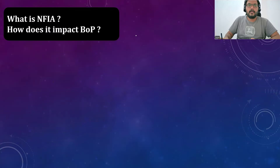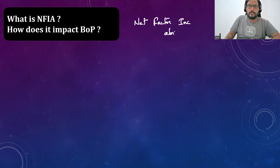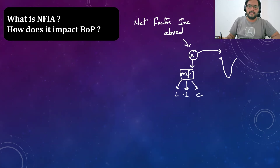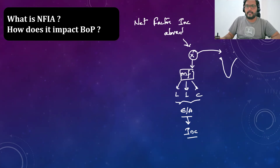Let us understand what balance of payment is and what NFIA is. NFIA means Net Factor Income from Abroad. Net factor income from abroad refers to some economic activity happening in other countries, out of which India receives income. For example, a manufacturing company involves land, labor, and capital — the income earned as profit from that activity received by India is called NFIA.